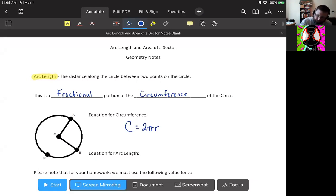So arc length is based on the measure of the central angle, which we are going to call theta. That is the Greek letter theta. Once again, if you're not comfortable with using a Greek letter, just use an x. It's a variable. You can use whatever letter you want.